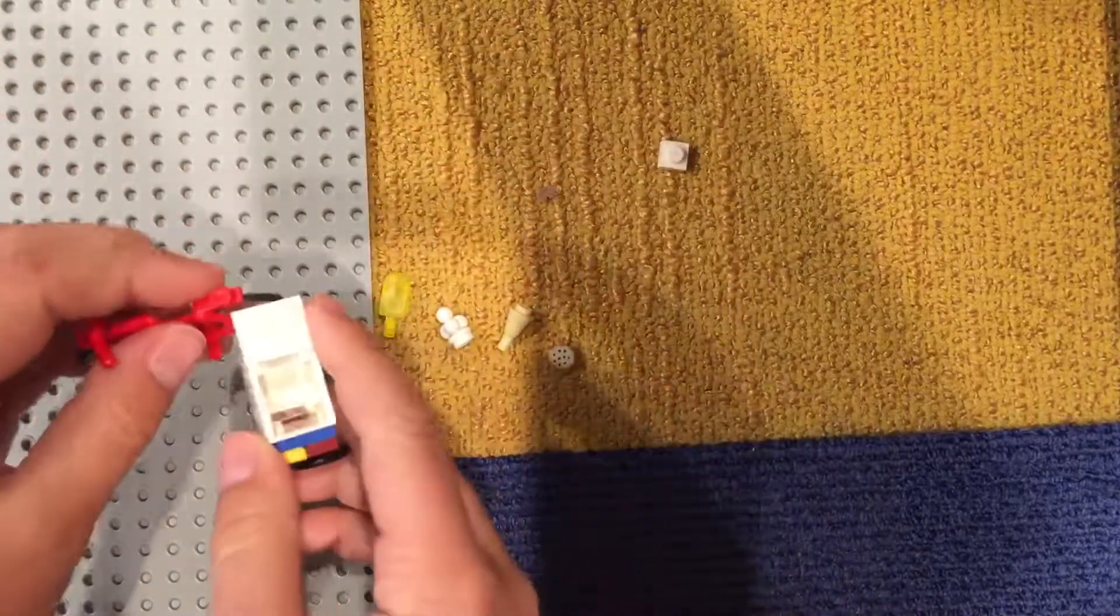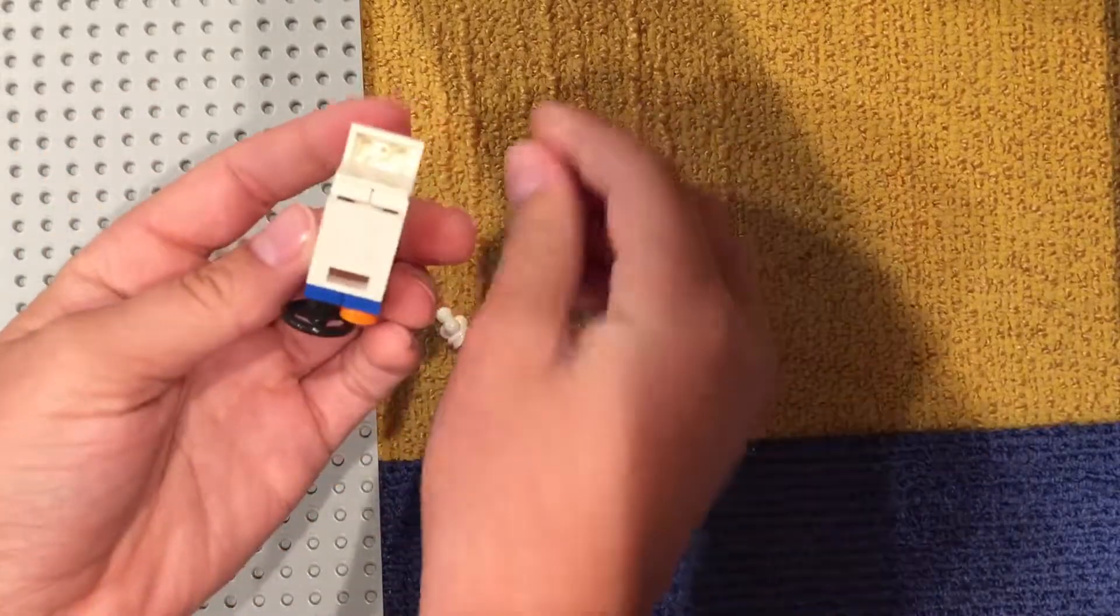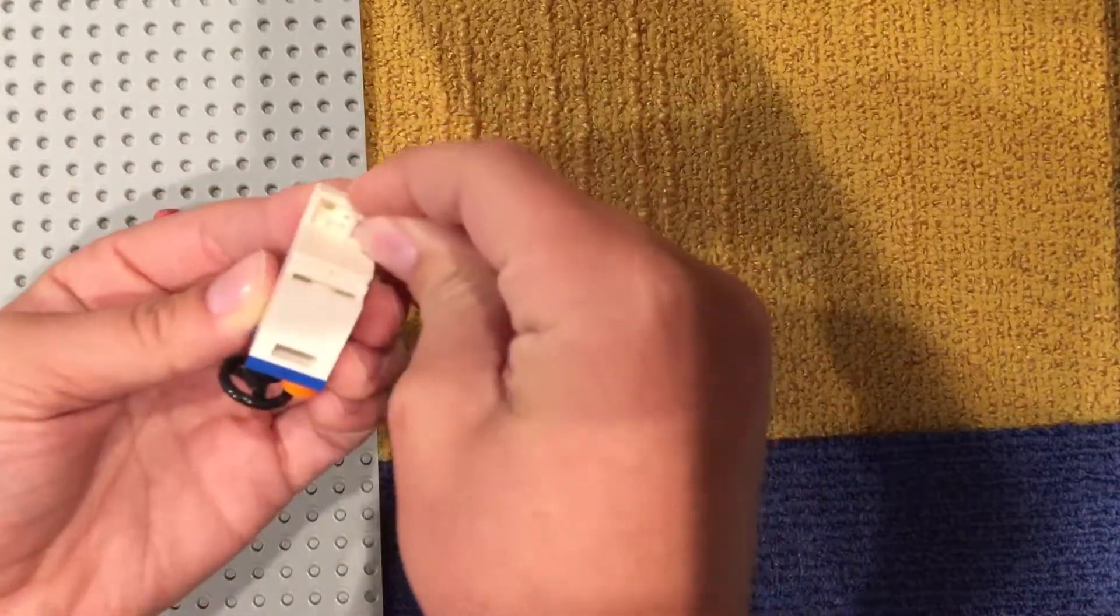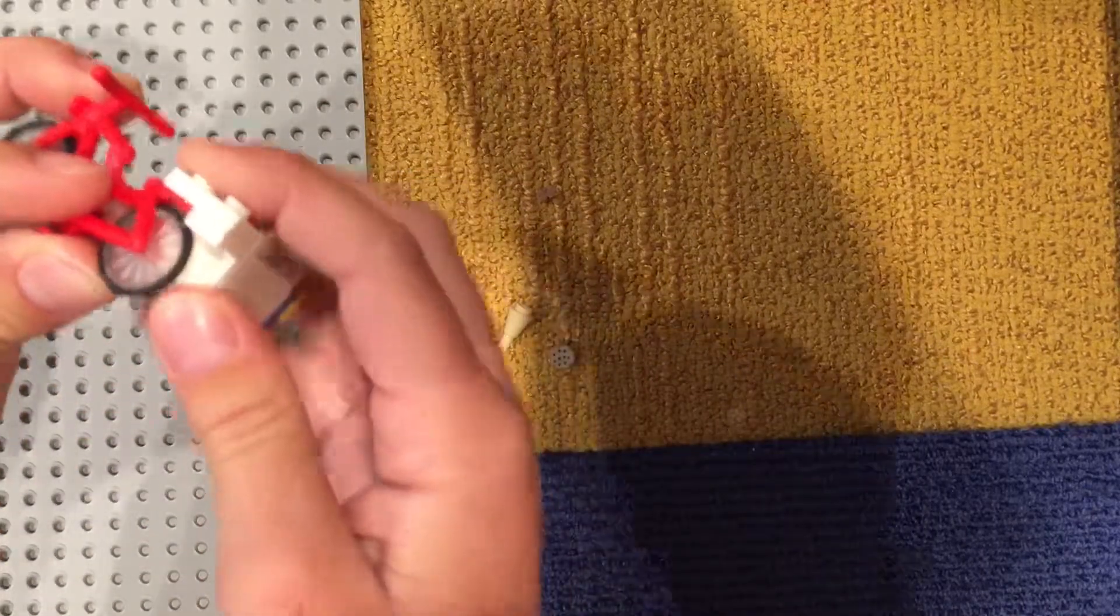And then what you're going to do next is take this and snap a one by one white brick on the bottom and you're just going to snap it right onto the bike here.